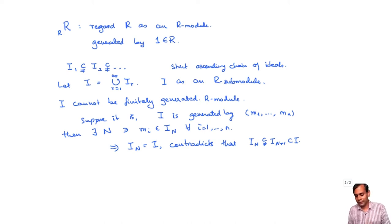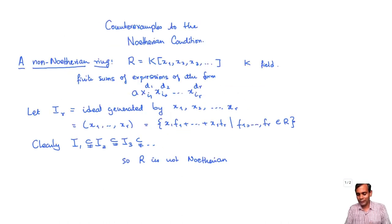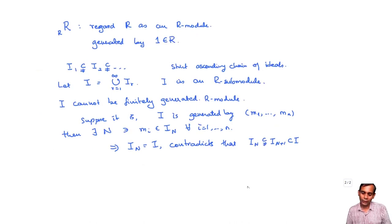So I is always going to be a submodule of a finitely generated R-module that is not finitely generated. In this example, of course, I was keeping in mind the ring R of polynomials in infinitely many variables. But I didn't actually use that anywhere. I just used the fact that R has a strict ascending chain of ideals. So this works for any non-Noetherian ring R.